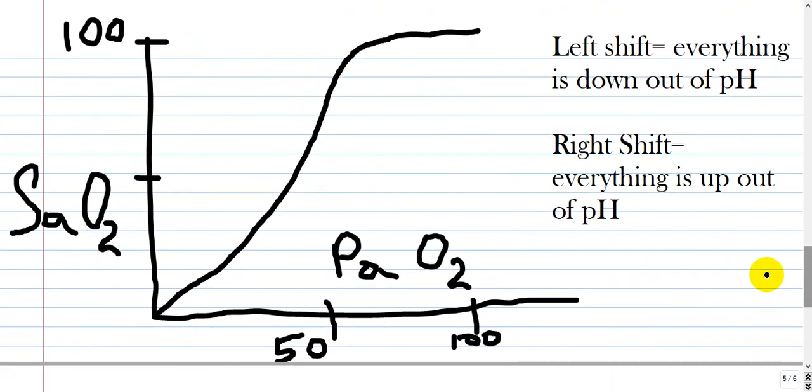Another picture, which is drawn by me, is the oxyhemoglobin dissociation curve. At P50, which is pressure of oxygen in the blood, saturation is around 50%.